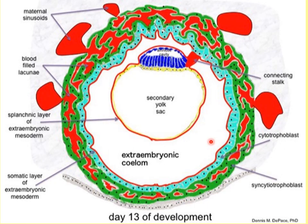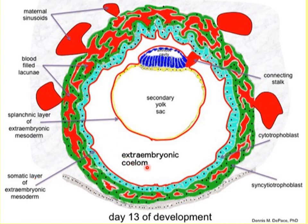Multiple cavities develop in the extra-embryonic mesoderm, coalesce, become confluent, and form a larger extra-embryonic coelom cavity. This splits the extra-embryonic mesoderm into two layers: the splanchnopluric mesoderm along the yolk sac (the visceral layer) and the somatopluric mesoderm on the outside (the parietal layer). The connecting stalk remains as the only connection to the outer cytotrophoblastic layer.